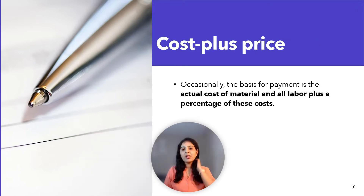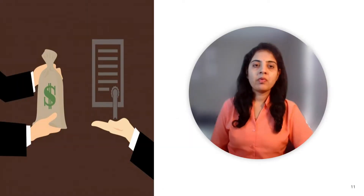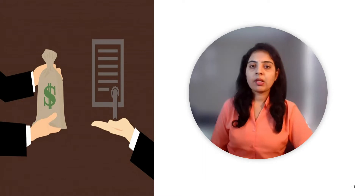Occasionally the basis for payment is the actual cost of material and all labor plus a percentage of this cost, termed as cost plus price. The estimator, from past experience and with the aid of cost data from previous similar jobs, determines the cost of preparing shop drawings and fabricating the structural steel.